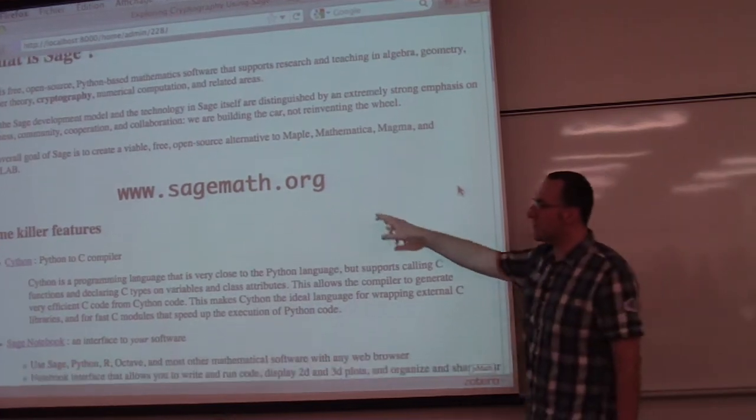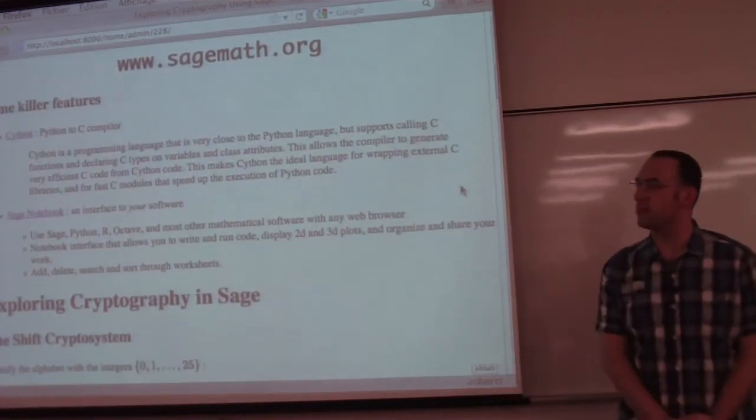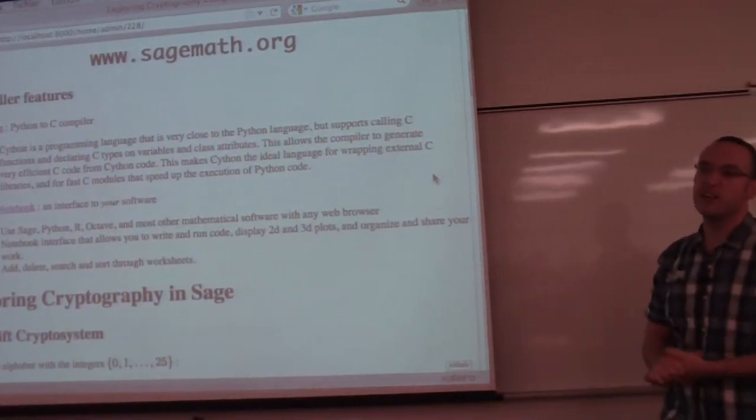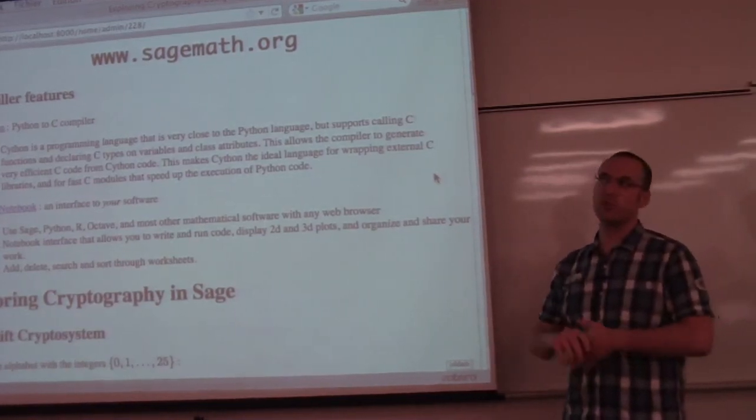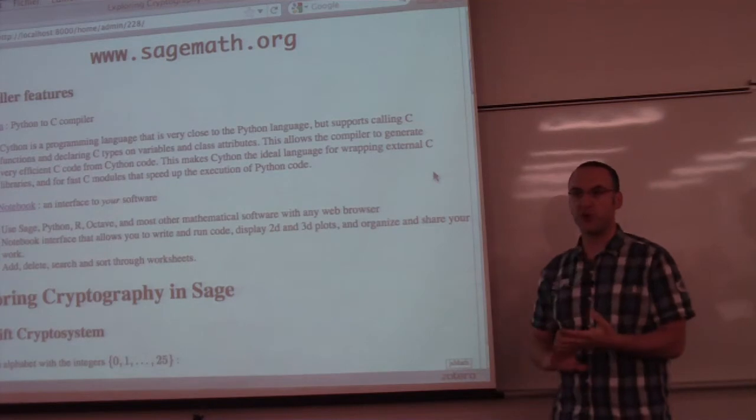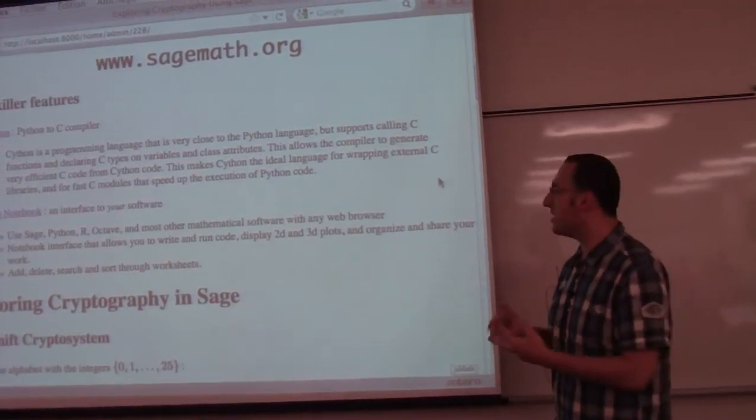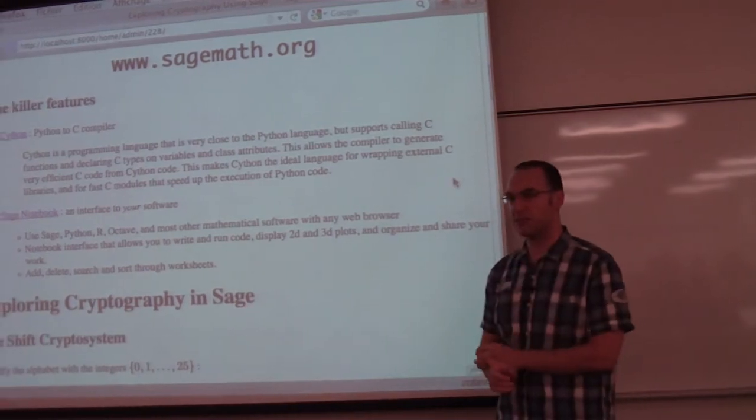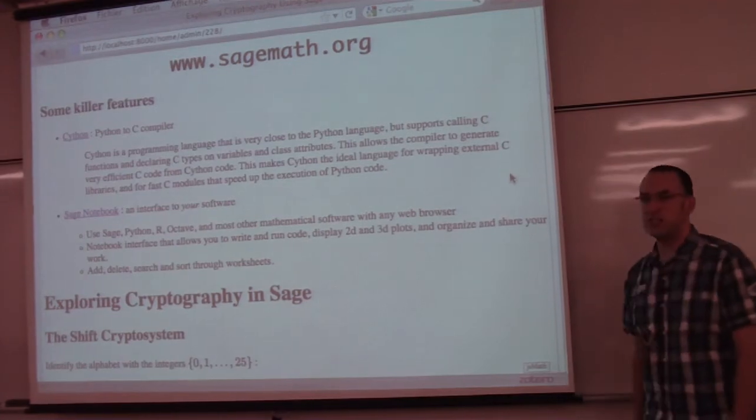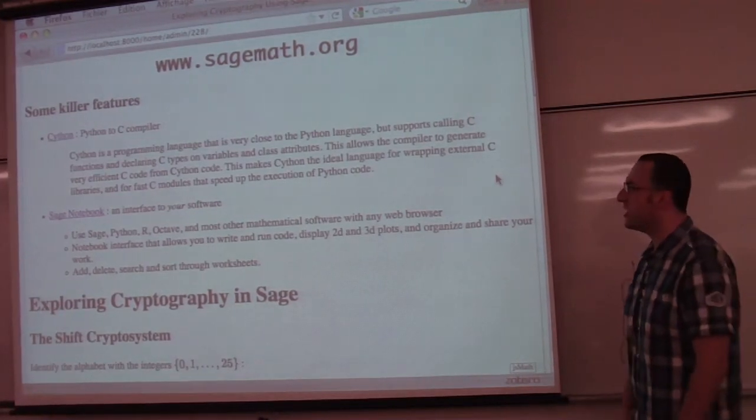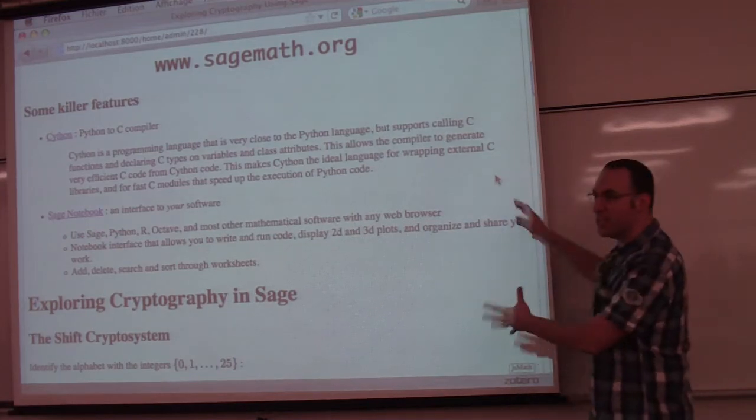The website for SAGE is sagemath.org. And I'll mention quickly two killer features of the software. One is Cython. So here you should think Python to C compiler. It's a super set of the Python programming language which allows you to declare data types and to use C data types in your code and then it gets compiled to C. This makes things run a lot faster. The second is the Sage notebook which is an interface to your software. You can run Python examples, include images and so on. And it's great for doing presentations as you can see here.